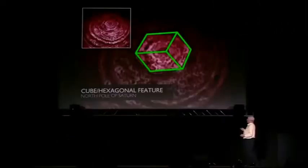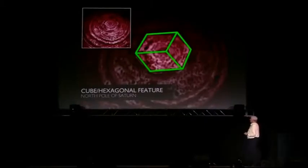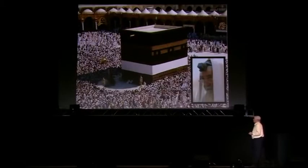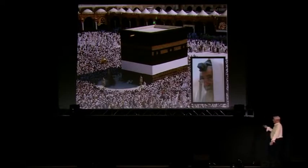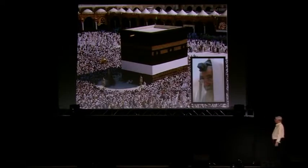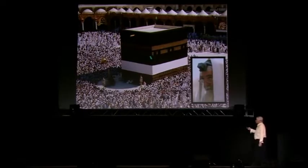It just so happens that an ancient symbol of Saturn is the cube, especially the black cube. And I would suggest that's what they are. The Kaaba — the focus of worship in Islam — means cube.